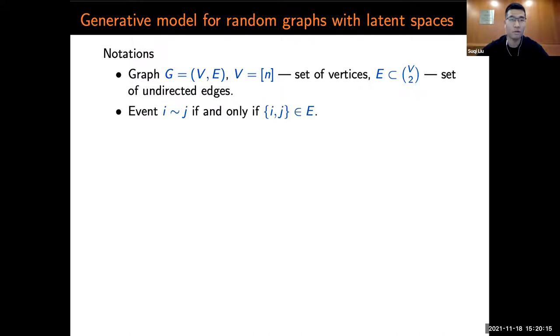Let's start with some notations. A graph G is a tuple of a set of vertices from 1 to n and a set of edges between them. And we denote the event i connected to j if and only if there is an edge.